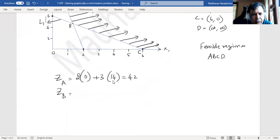Right. So Z_B is 2 times 4/3 plus 3 times 14/3. This is 8 plus 42/3, which equals 50/3.